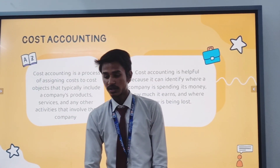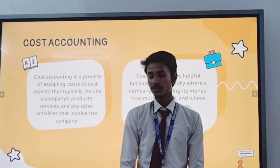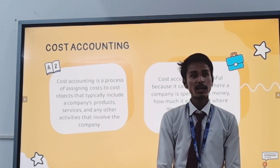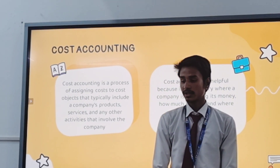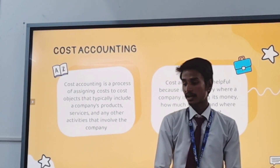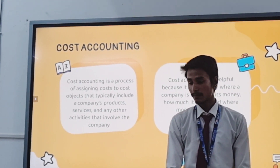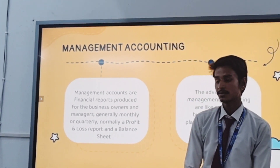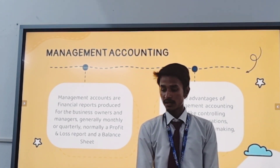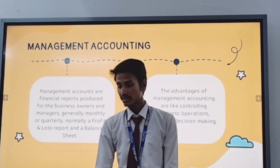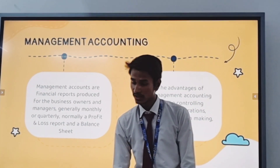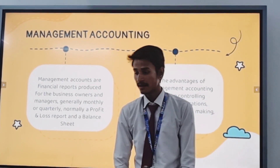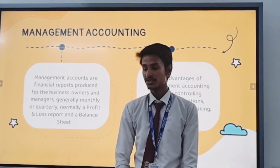Cost accounting is a process of assigning cost to cost objects, which typically include a company's products, services, and other activities that involve the company. Cost accounting is helpful because it can identify where a company is spending its money, how much it earns, and where money is being lost. Management accounts are financial reports produced for business owners and managers, generally monthly or quarterly — normally a profit and loss report and a balance sheet. The advantages of management accounting include controlling business operations, planning, and decision making.